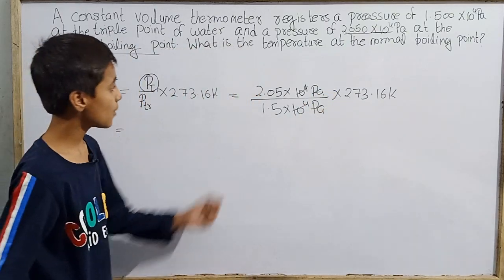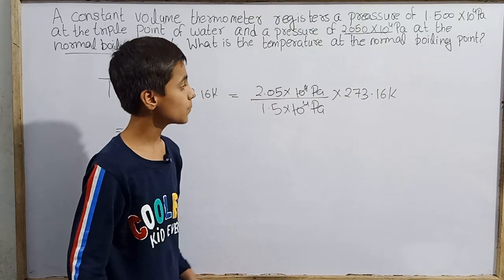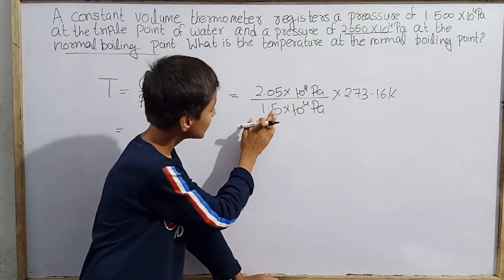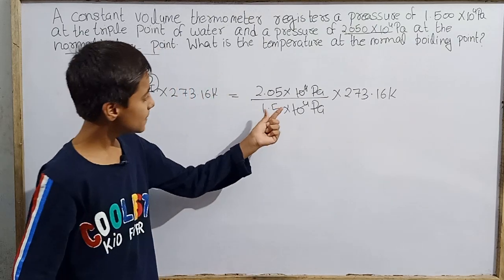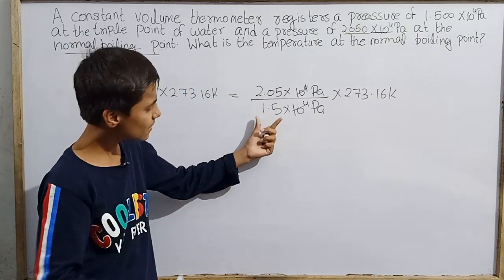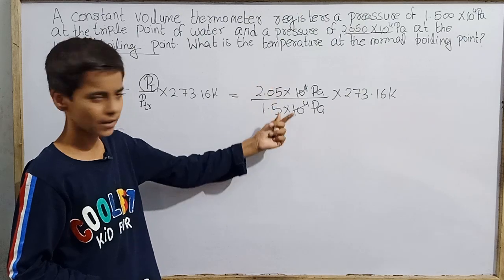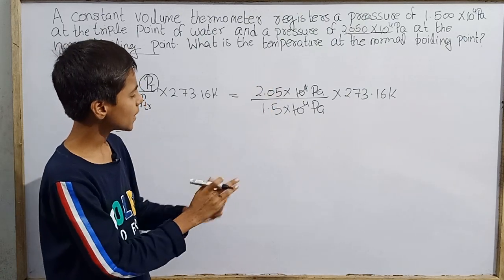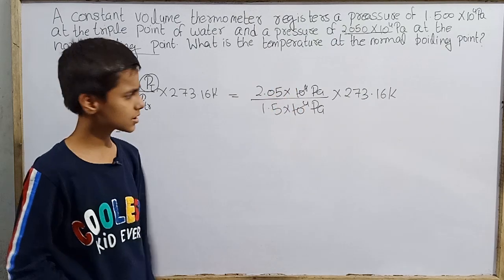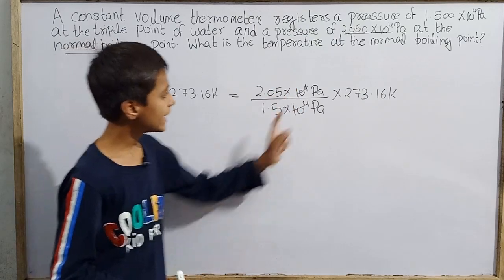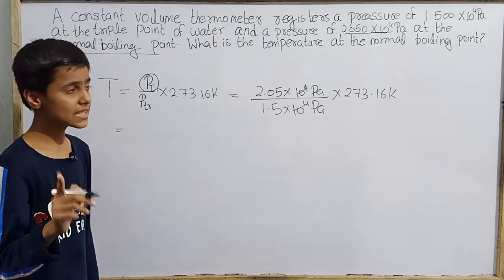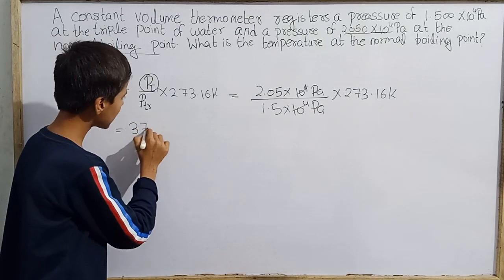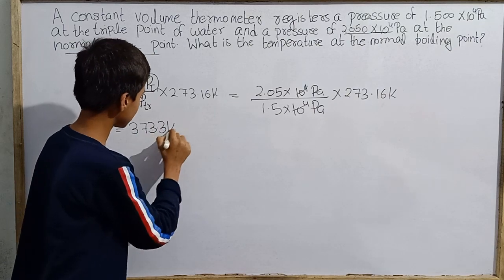We get something about 2.05 by 1.5 into 273.16 Kelvin. This will be about greater than 1 point something. If I am correct, this will be 1.366 continue to 273.16 Kelvin. So this will be about 3, this can be 373.3 Kelvin.